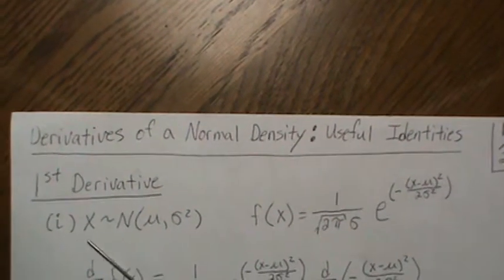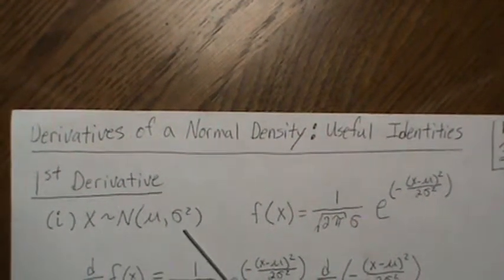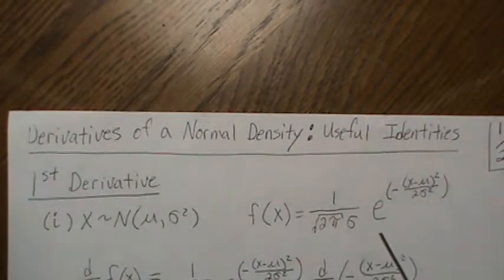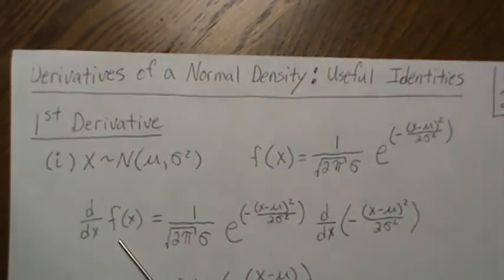So if we let X be a normal distribution mean μ variance σ² and the density can be written like this, and we want to take the derivative of f.